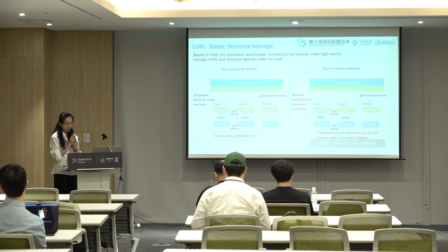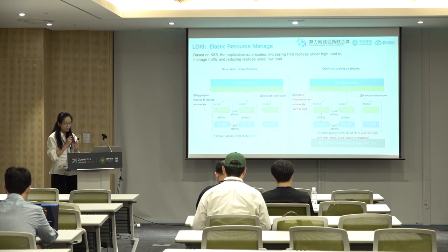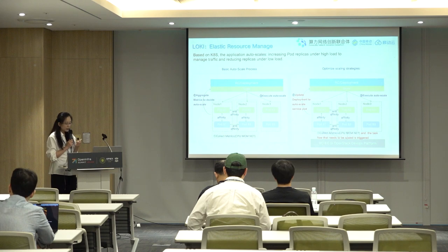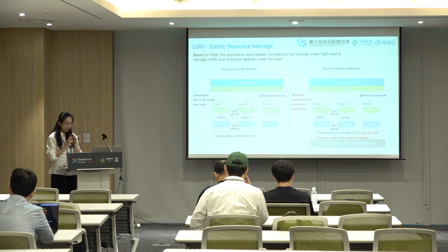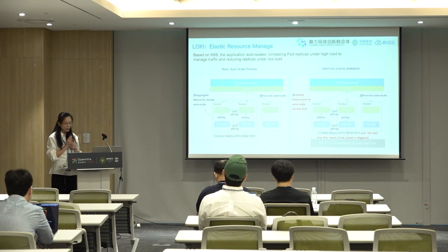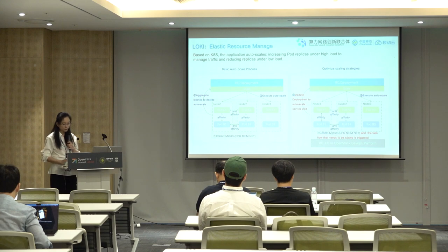Another very important feature is elastic resource management based on cloud-native. We increase pod replicas under high load to manage traffic and reduce replicas under low load. In order to save the number of OpenStack control nodes or BCEC control nodes while ensuring service stability, we use auto-scaling based on collected metrics such as CPU, memory, and network metrics. We update deployment to trigger auto-scale service pods when we receive a large number of requests, and can promptly expand the number of service pods and release them after pressure returns to normal.